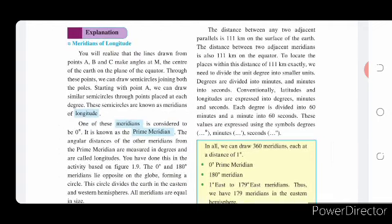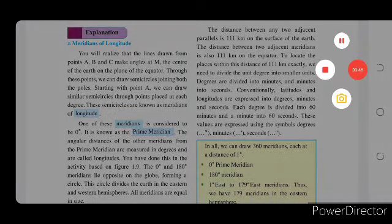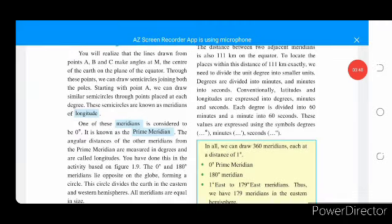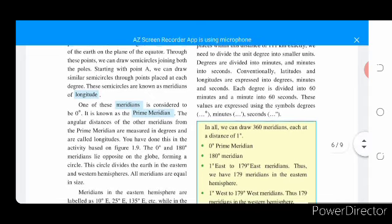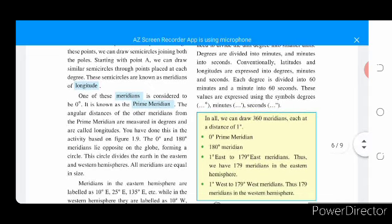The distance between two adjacent parallels is 111 km on the surface of the earth. The distance between two adjacent meridians is also 111 km on the equator. However, to locate the places within the distance of 111 km exactly, we need to divide the unit degree into smaller units. Degrees are divided into minutes and minutes are divided into seconds. Conventionally, latitudes and longitudes are expressed in degrees, minutes and seconds. Each degree is divided into 60 minutes and minutes into 60 seconds. These values are expressed using symbols.